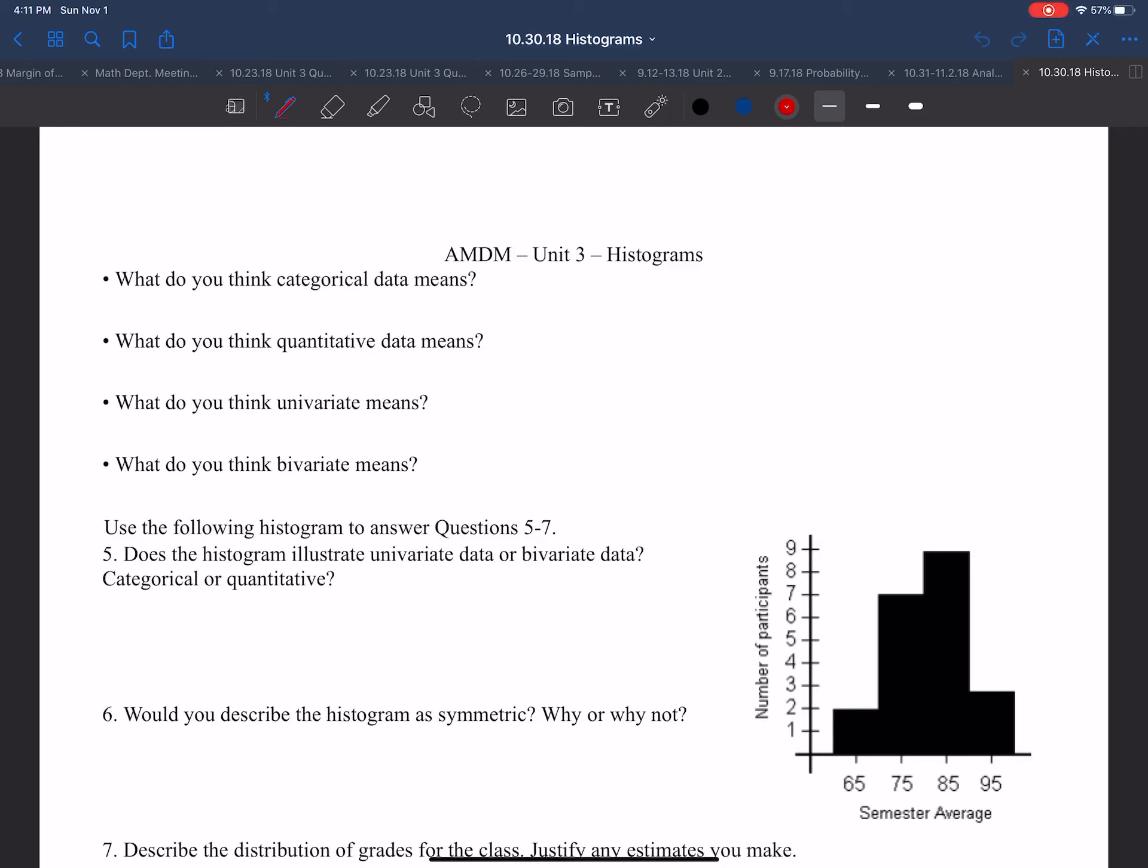The first thing we're going to be talking about is categorical data. What do you think categorical data means? Well, as the name implies, it's things that can be broken up into categories. Categorical data is data that can't be measured. Some examples of this are: what is your hair color, or favorite pizza. These are things that aren't necessarily numbers, but more so categories.